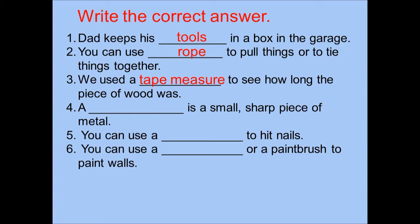Number four: A blank is a small, sharp piece of metal. What is the correct answer? The correct answer is nail. Please read after teacher: A nail is a small, sharp piece of metal.